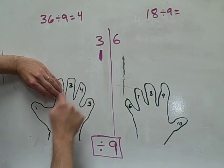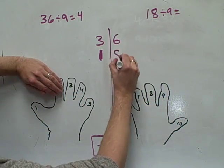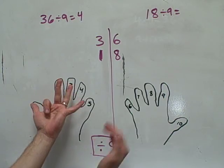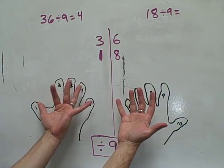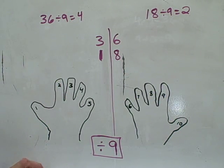If you put this finger down, that leaves 1, 2, 3, 4, 5, 6, 7, 8 on that side. So we made 18 with our fingers by putting the second finger down. So the answer is 2. Because we put the second finger down.